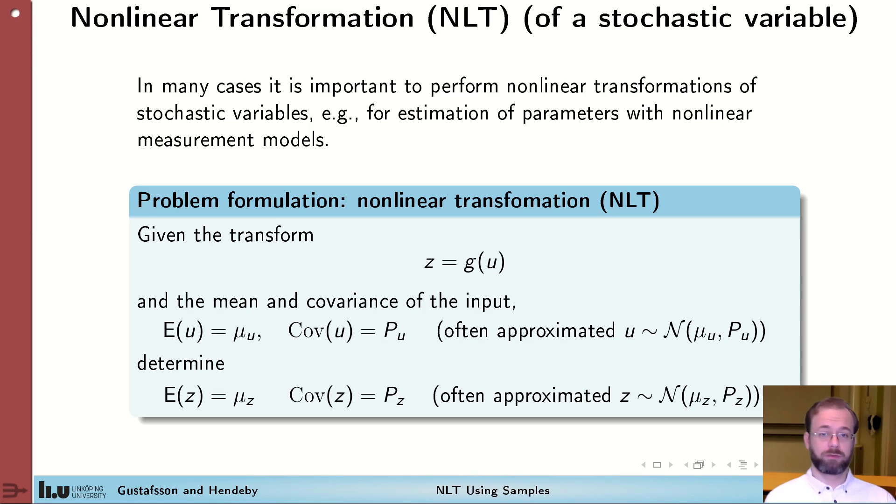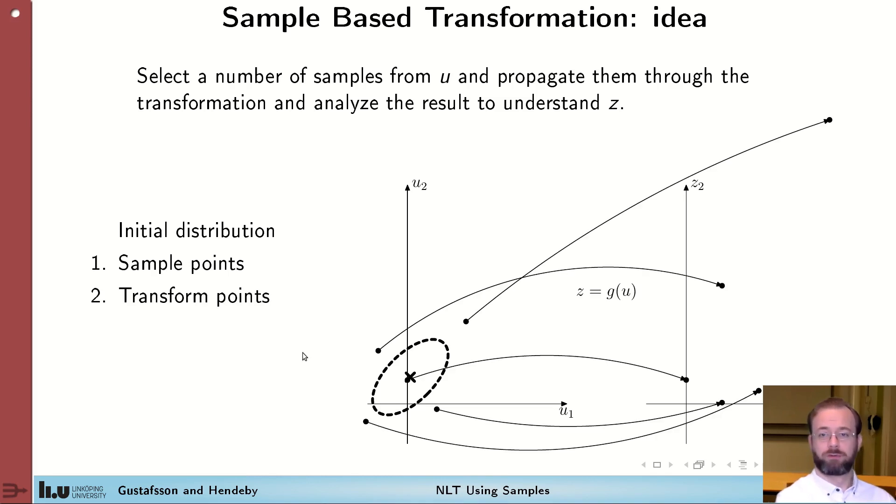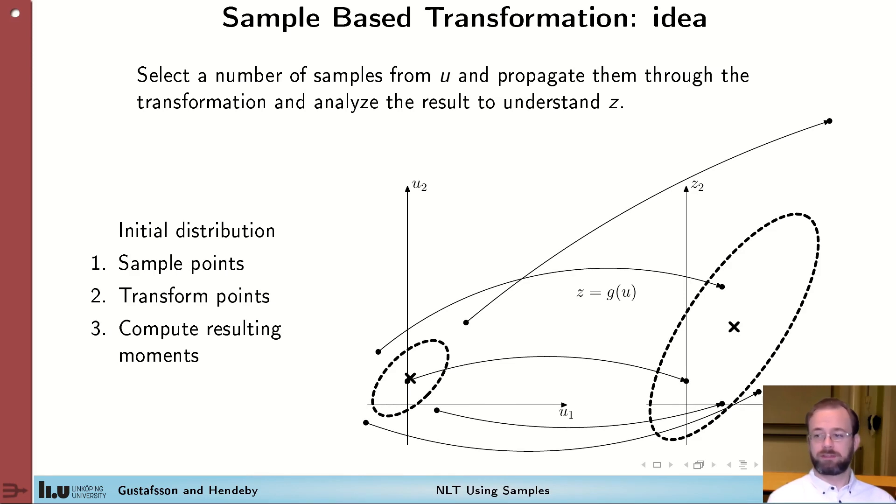Often we denote both the input and output as gaussians but this is not necessarily true. The sample-based transformation methods all share the same basic idea which is rather straightforward. We start with some initial knowledge about the variable u, the mean and the covariance. We then select a number of points in different ways depending on which method we use, and these are then transformed from the u domain to the z domain. Afterwards these are combined and the mean and covariance is computed.